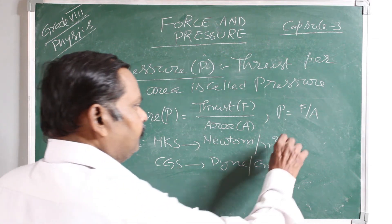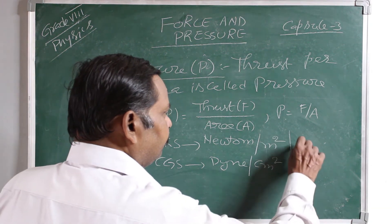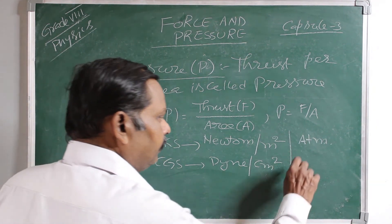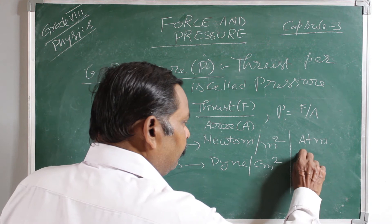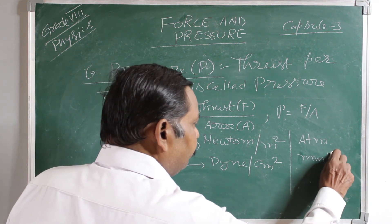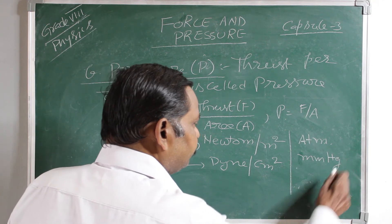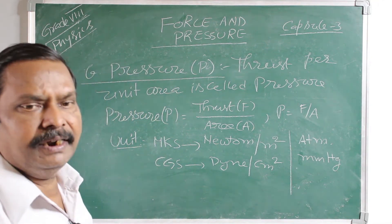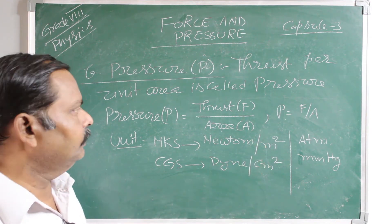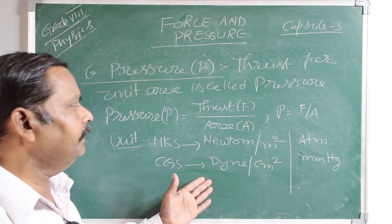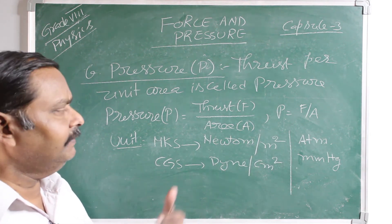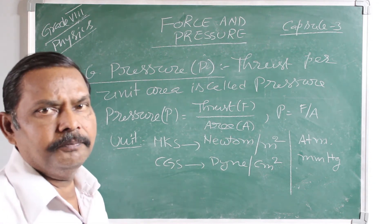There are other units also for pressure — atmospheres and millimeters of mercury height. These are the other units used to measure pressure.